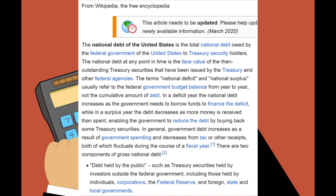There are two components of gross national debt: debt held by the public, such as treasury securities held by investors outside the federal government, including those held by individuals, corporations, Federal Reserve, and foreign, state, and local governments.